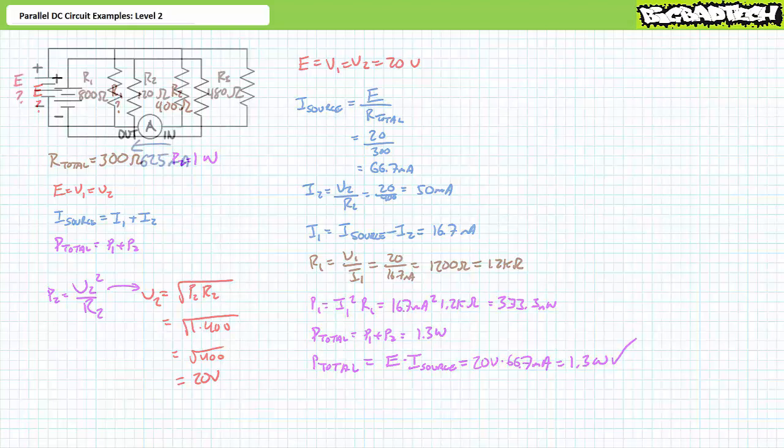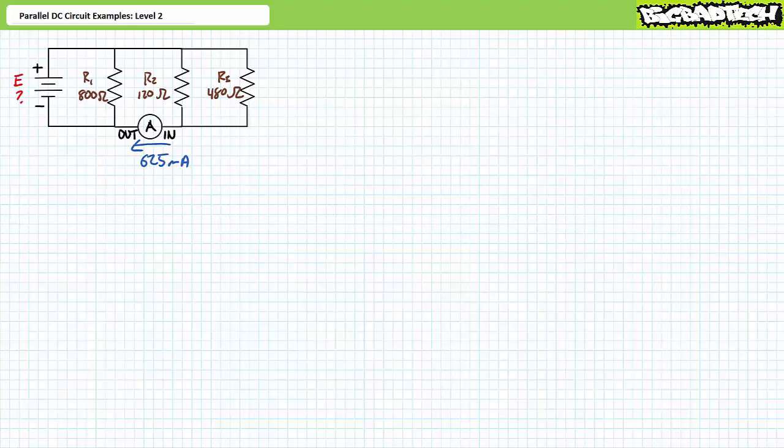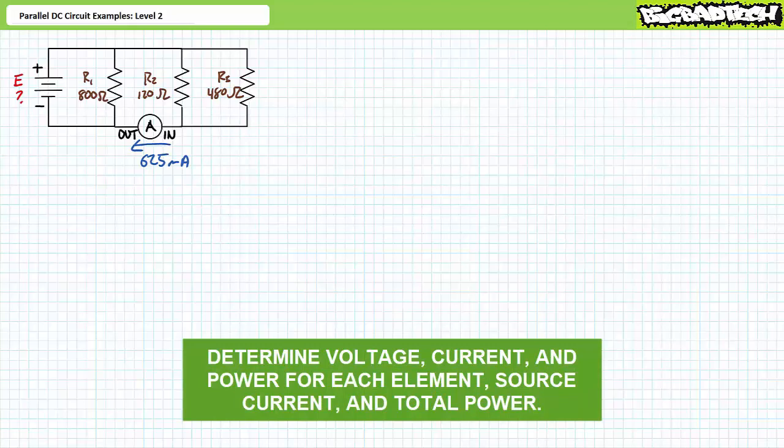The next illustrated example features a voltage source of unknown magnitude and a parallel combination of R1 (an 800-ohm resistor), R2 (a 120-ohm resistor), and R3 (a 480-ohm resistor). An ammeter installed in this circuit indicates 625 milliamps of current in the indicated direction. We're being asked to solve for the voltage drop across each element, the current through each element, the power dissipated by each element, the source current, and the total power. Pause the lecture and try this on your own.